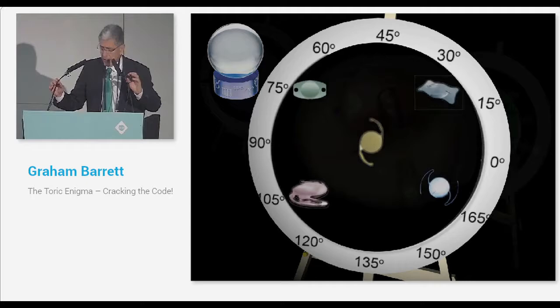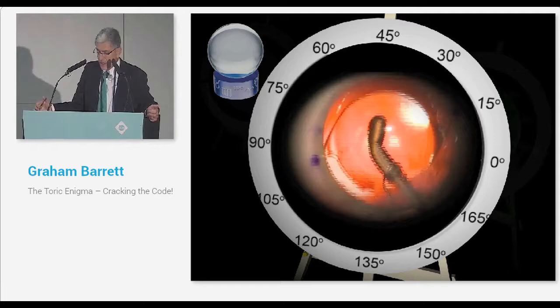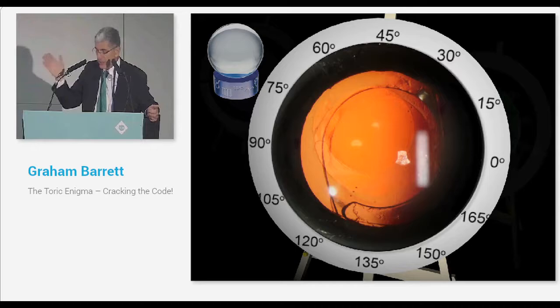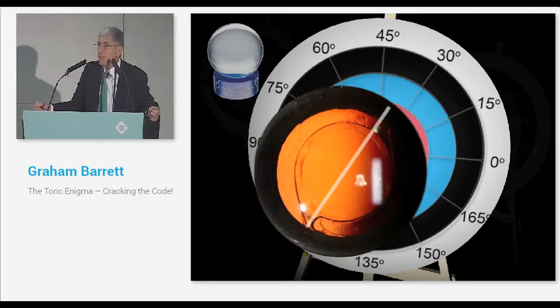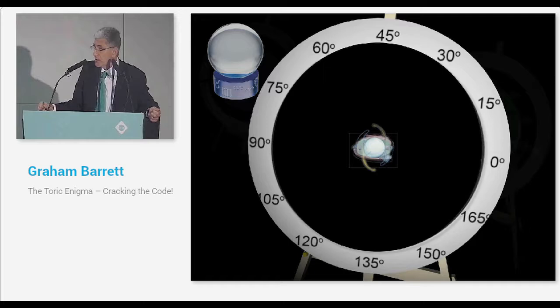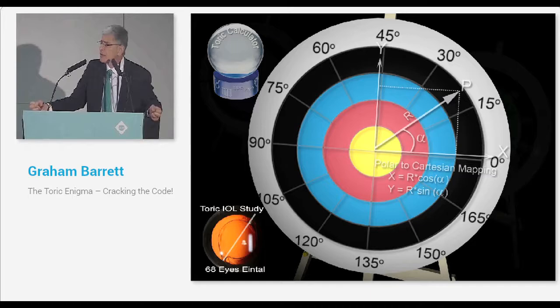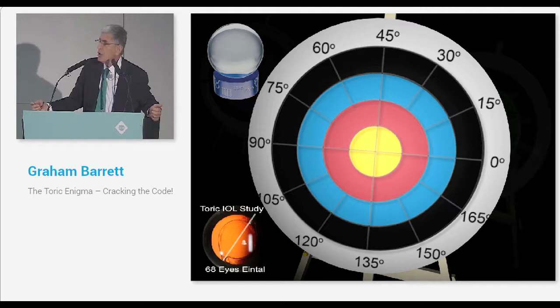There's many different toric lenses available. Probably the Alcon toric is the most commonly used. When you're trying to compare calculation methods, there's some noise. One of the noise factors is, is the lens exactly on your intended axis? You can get rid of that noise by measuring the axis postoperatively. The surgical-induced astigmatism is also noise, but you can get rid of that noise by measuring using the post-op cornea keratometry. All that's left is the calculation method that you're using.